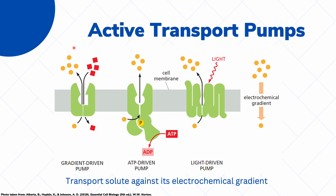Now let's talk about active transport pumps. These are proteins that transport solutes against their electrochemical gradient — from low concentration to high concentration — and therefore require energy. There are three different pumps with three different types of energy sources: the gradient-driven pump, which relies on the energy of the electrochemical gradient; the ATP-driven pump, which uses energy from the breakdown of ATP; and light-driven pumps, which use solar energy. Light-driven pumps are only found in plant cells and other photosynthetic cells, while animal cells use both gradient-driven and ATP-driven pumps.